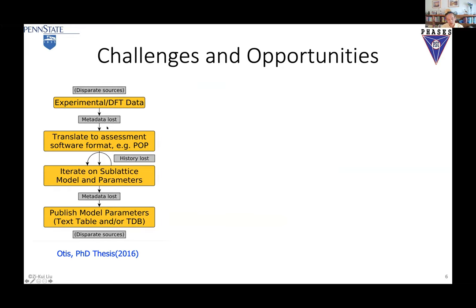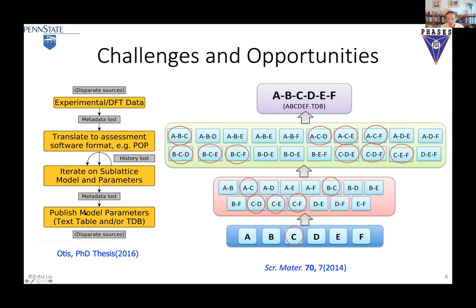That means that in principle you can use your database; however, the issue is that when you have a bigger database and you want to modify it because you get new data — whether from experiments or most importantly from DFT calculations — you need to revise it. For example, in a six-component system, if you change one parameter in one element, you have to change a lot of systems. But the information and knowledge we had in the process are already lost. So it becomes very challenging — that's what motivated us to develop new tools.